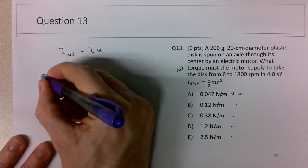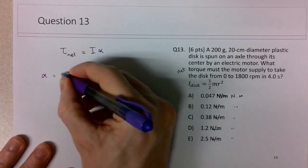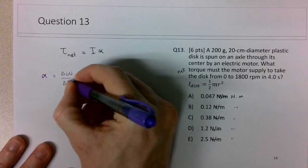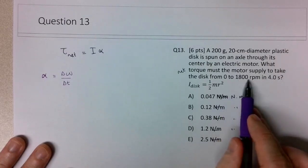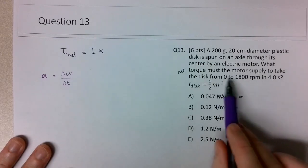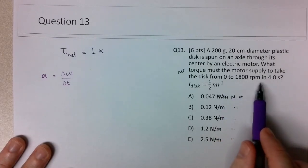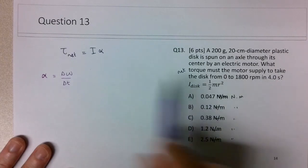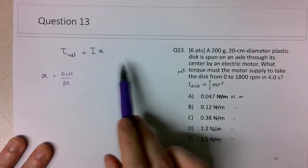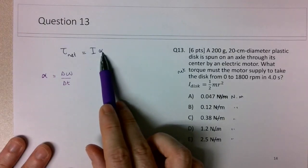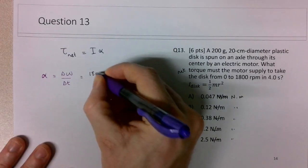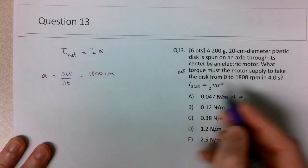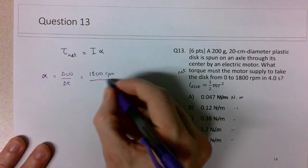So alpha will be equal to delta omega over delta T. Delta omega is 1,800 rpms. But I can't divide rpms by seconds. And in order to get the net torque in the correct units, alpha must be in radians per second squared. So the change here is 1,800 rpms minus zero, which is just 1,800 rpms over 4 seconds.